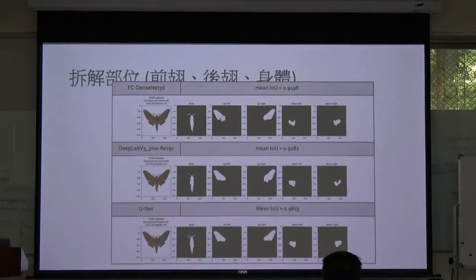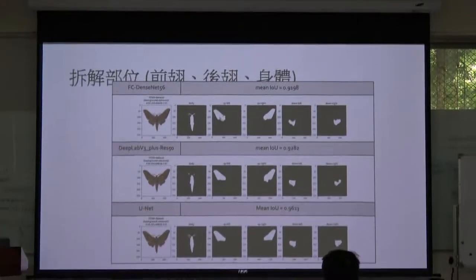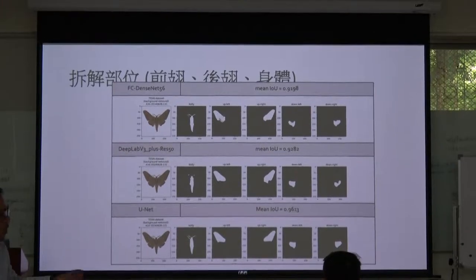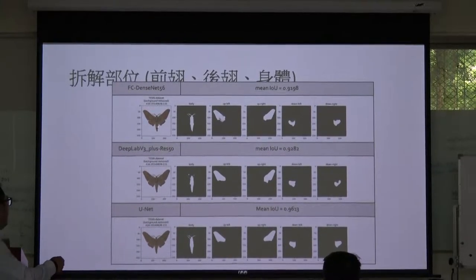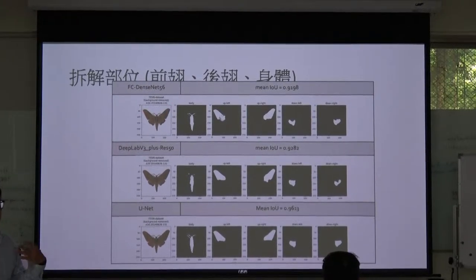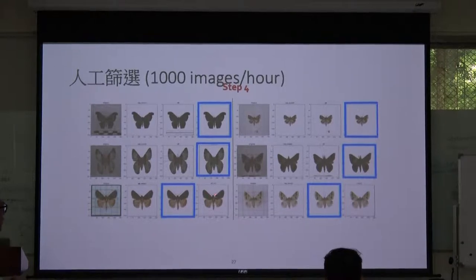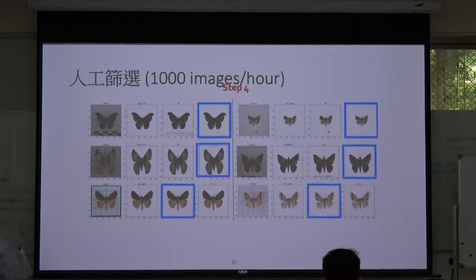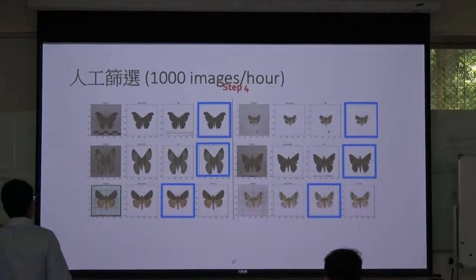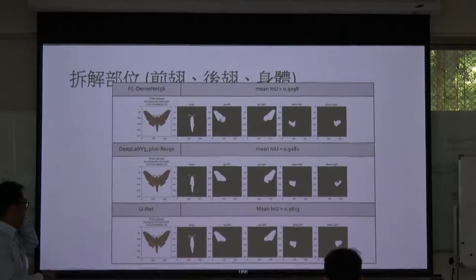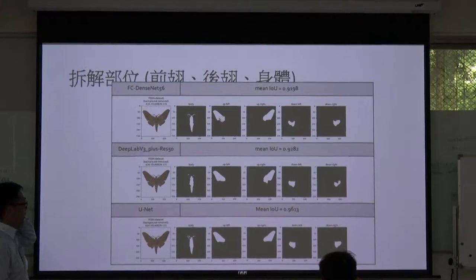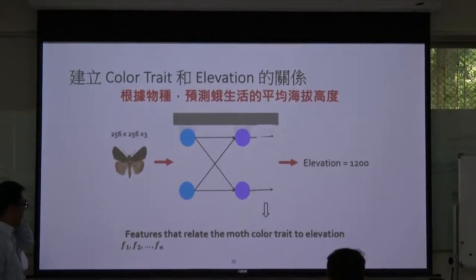Based on our understanding of the species, my postdoc reasoned that different parts of the moth need to be separated. When moths perch on trees, many species only show their forewings while the hindwings are hidden. The color patterns of hindwings are often different from forewings. Analyzing the whole image would probably mess up our results. So we also spent time separating different body parts before having the raw data ready.